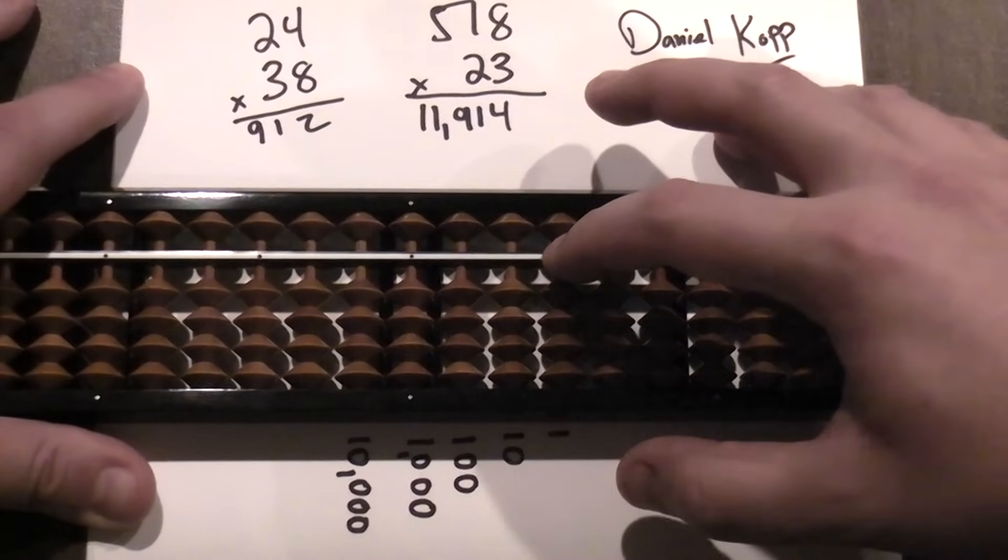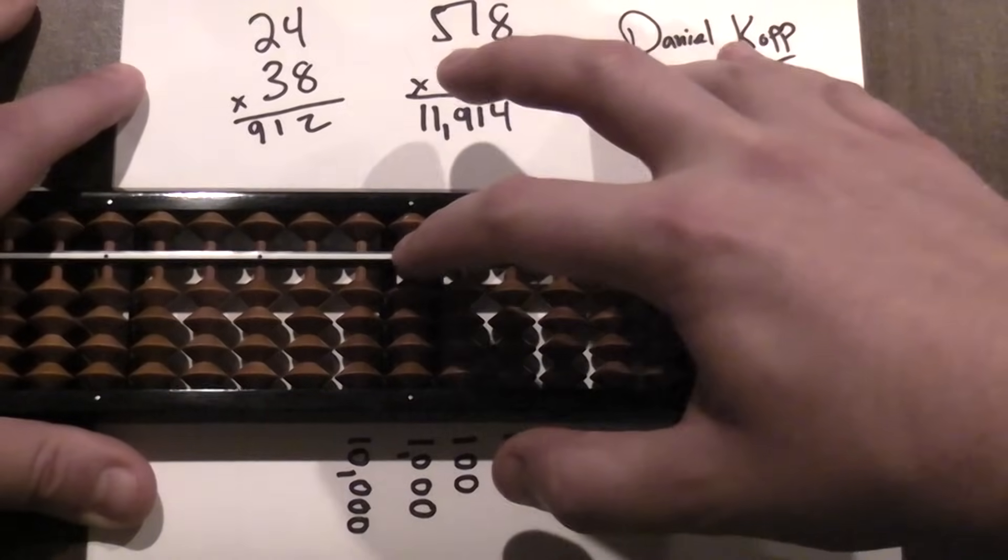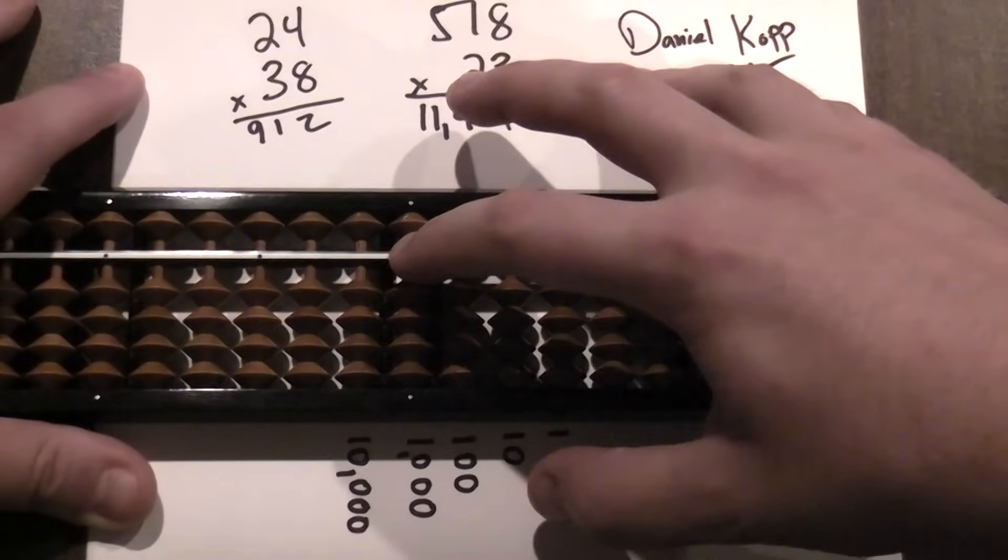That means I need to start four places over when I'm doing my multiplication on my Soroban. So I go here to my ones column. I go one, two, three, four. So I start my multiplication here.